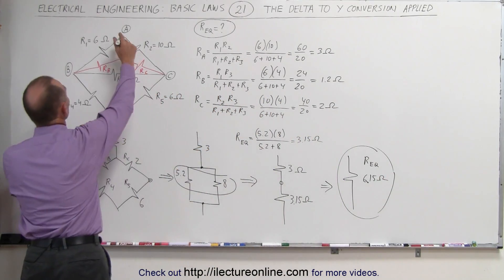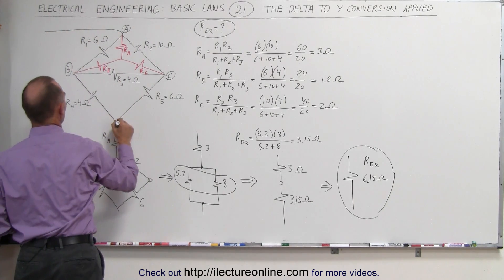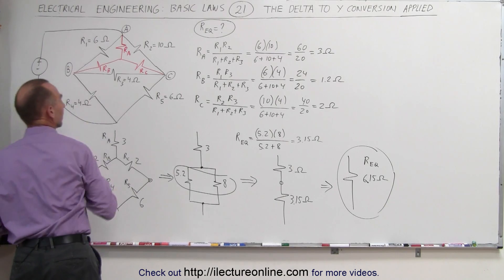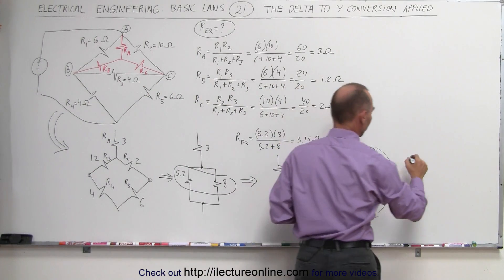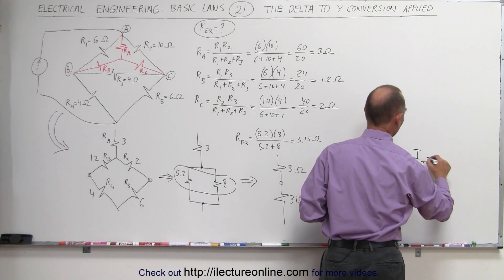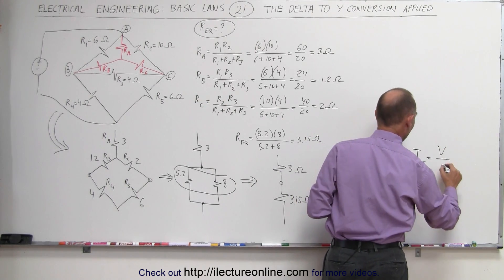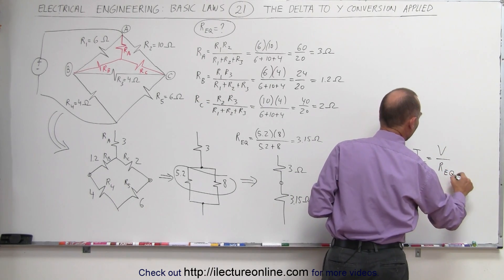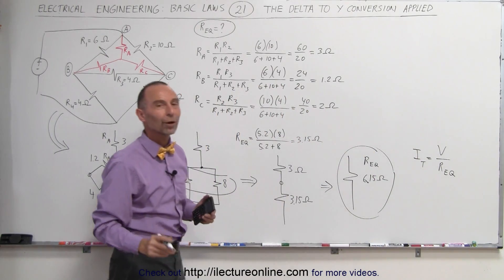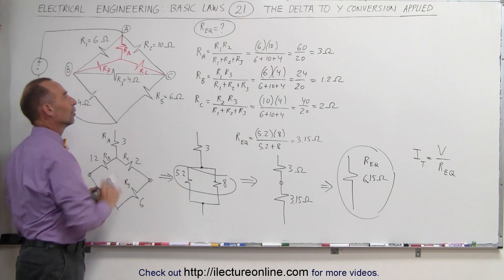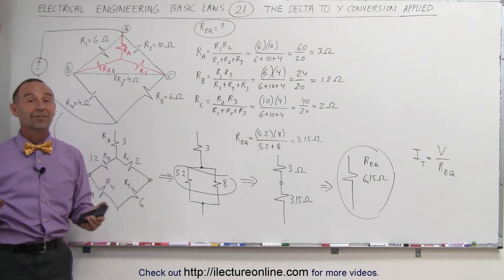Whatever this circuit is connected to, if this is now connected to a voltage source, whatever the voltage source may be, the current in the entire circuit, I total, will simply be the voltage of that voltage source divided by R equivalent. And that's how we find the circuit through one of those bridge networks using the delta to Y conversion. And that's how it's done.